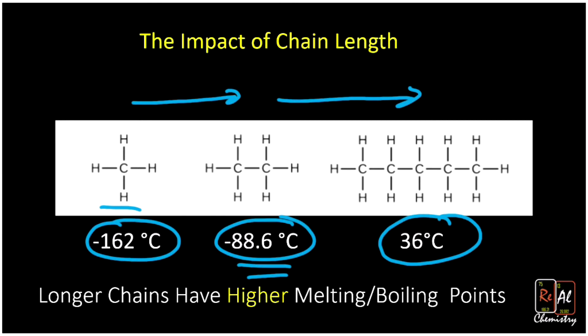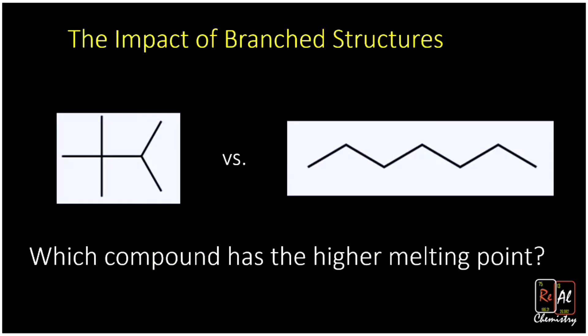So that's the impact of chain length. What about the impact of branching? By branching, we mean taking carbons and putting them on the middle of a chain. These two different carbon structures both have seven carbons. On the right we have heptane, and on the left we also have seven carbons, but the one on the left has many more branches — methyl substituents coming off a shorter hydrocarbon. Same total number of carbons, but we've branched that structure a lot, and that's going to change our melting points and boiling points.